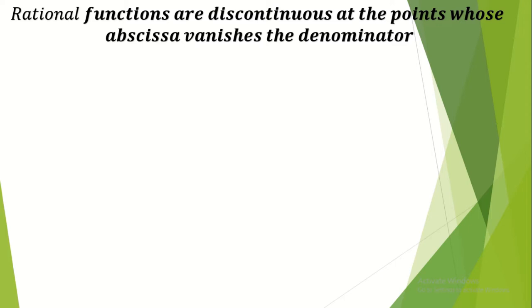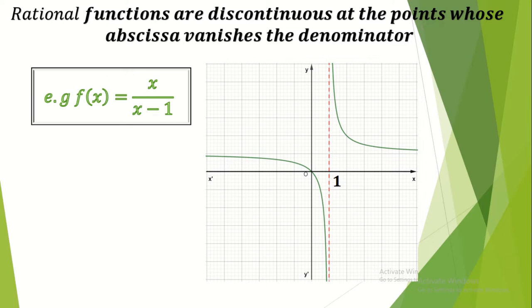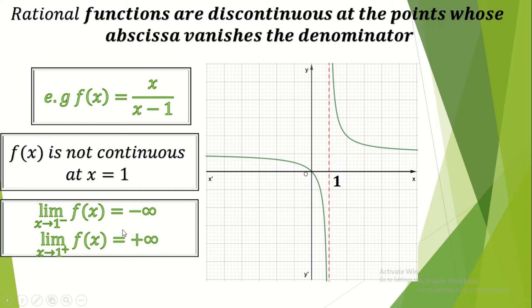Let's have some examples of discontinuous functions. Rational functions are discontinuous at the points where the denominator vanishes. For example, if we have f(x) = x/(x−1), note that when x = 1, f(x) will be 1/0, which is indeterminate. At the point x = 1 we have a discontinuity. The limit as x→1⁻ will be 1/0⁻, which gives us minus infinity, and the limit as x→1⁺ will be 1/0⁺, which gives us plus infinity. The two limits are completely different, so the function is discontinuous at x = 1.